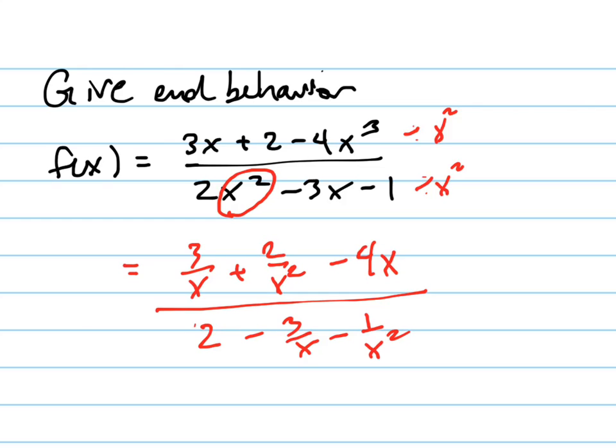And the reason we do that is because we can very easily see what happens. We're thinking of end behavior. So let's imagine when x goes to positive infinity, all of these things are going to go to 0.